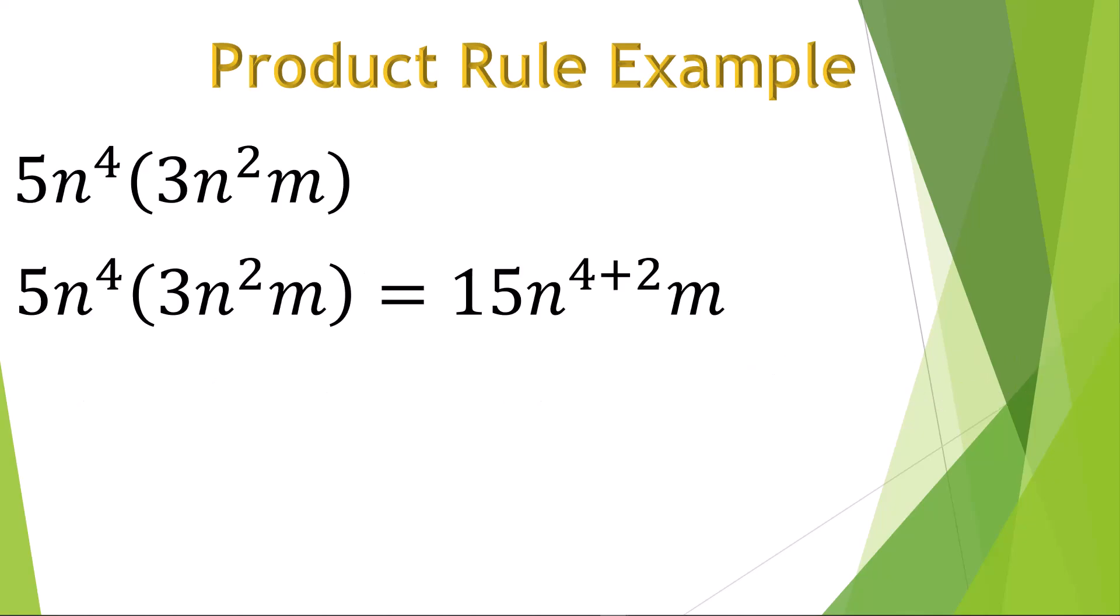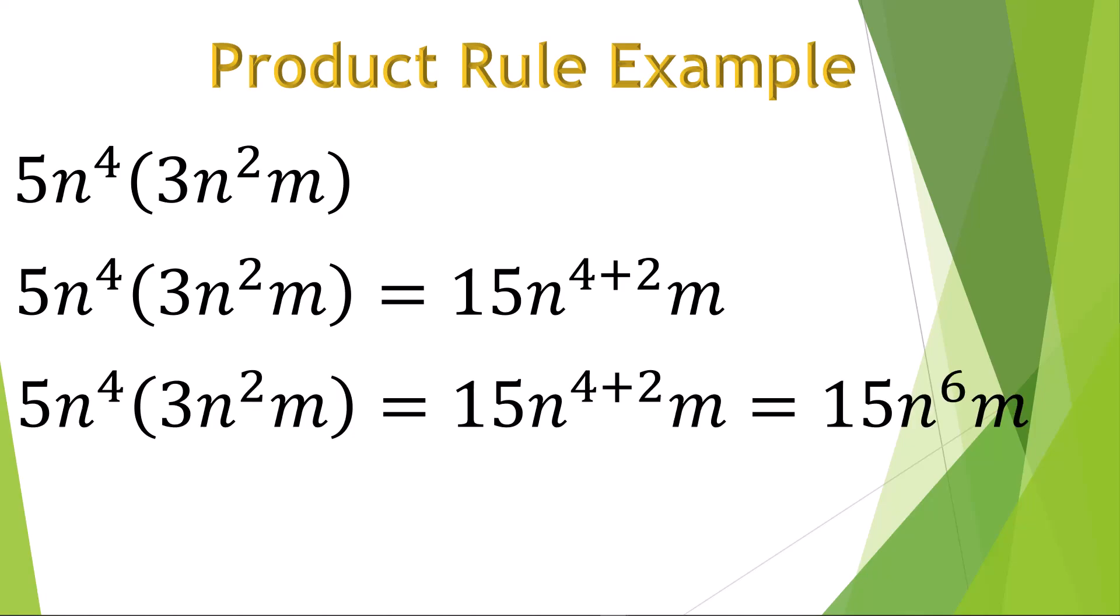Here we multiply the coefficient values 5 and 3 to get 15, and add the exponents 4 and 2 for the variable n. The variable m just stays the same, with the final result of 15n to the 6th times m.